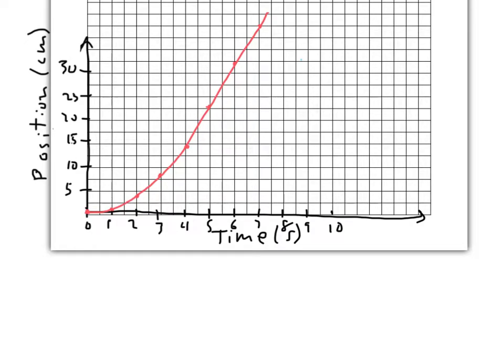All right students, in this video we're going to take a look at how we can interpret velocity and acceleration from a position versus time graph. So I'd like you to make a sketch of this in your notes. You should continue on with what we have already underneath our definitions of independent variable and dependent variable.